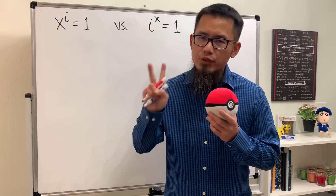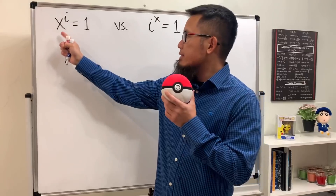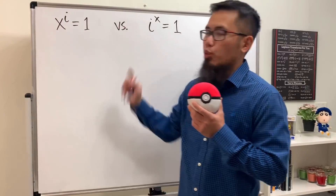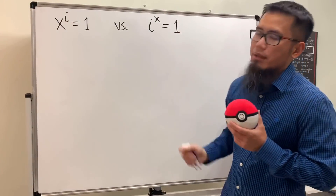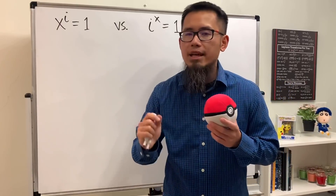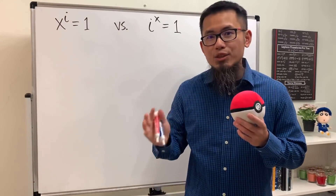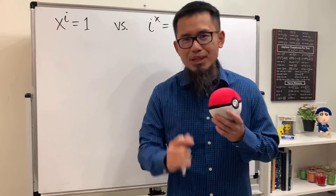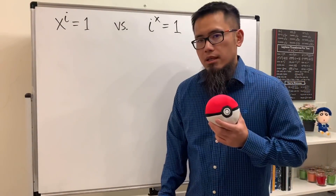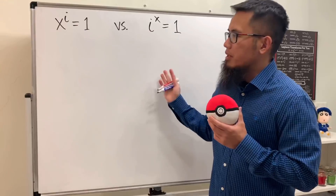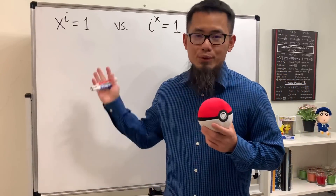Let's do some math for fun. Here we'll solve two simple-looking equations. The first one is x to the i power is equal to 1, and the second one is i to the x power is equal to 1. They look simple, but they are interesting and might be a little bit tricky. Please pause the video and try them first, but if you don't want to, I will do them for you.